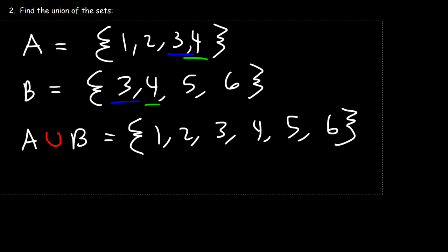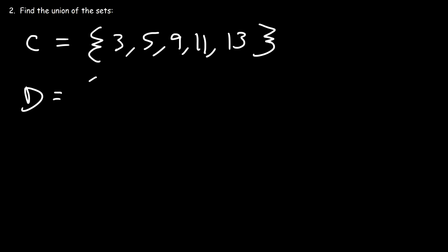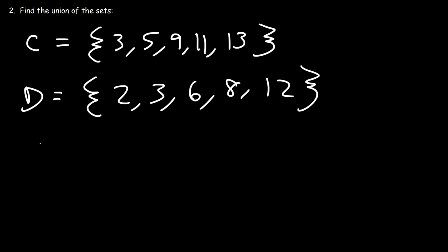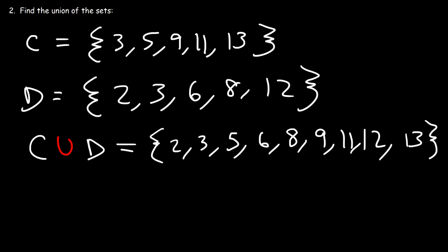Let's try some other examples. Let's say set C is 3, 5, 9, 11, and 13, and set D is 2, 3, 6, 8, and 12. Go ahead and find the union between sets C and D. All we've got to do is write all the numbers in C and D in order. So we have 2, 3, 5, 6, 8, 9, 11, 12, and 13. So that's the union of those two sets.